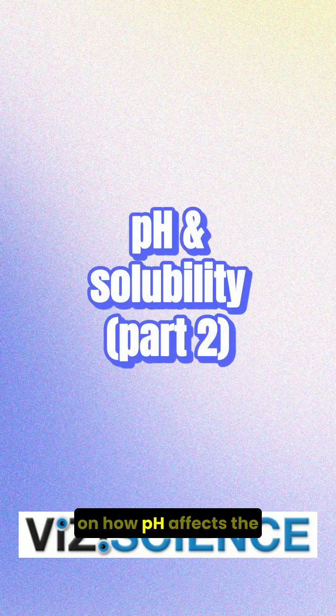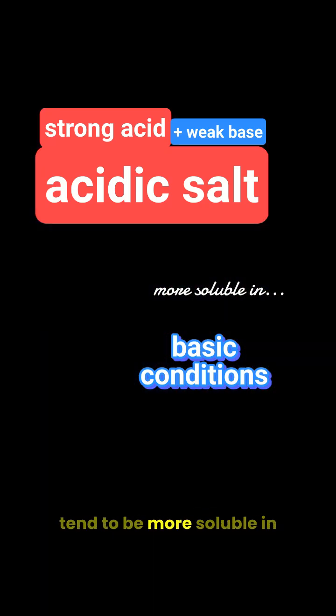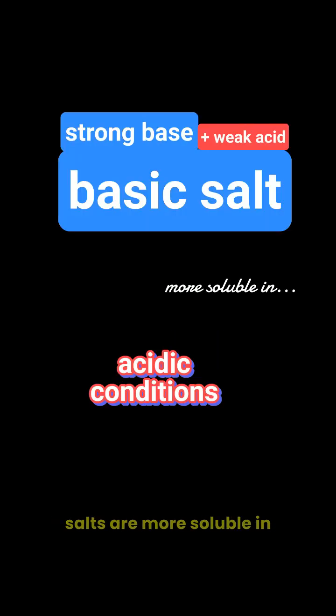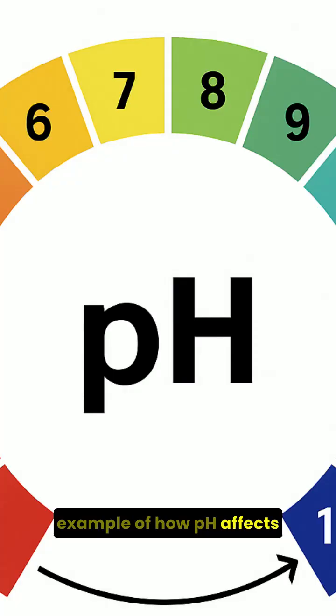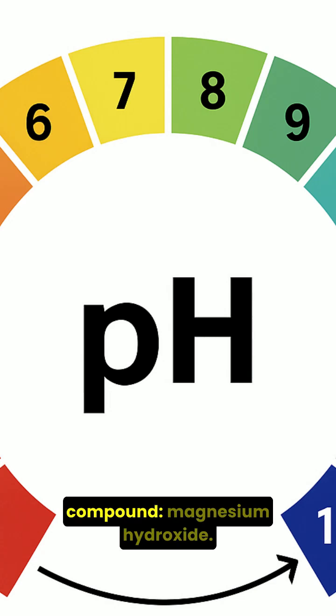Following our previous video on how pH affects the solubility of salts, we learned that acidic salts tend to be more soluble in basic conditions, and basic salts are more soluble in acidic conditions. Now, let's explore another example of how pH affects the solubility of an ionic compound.